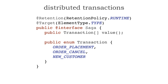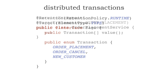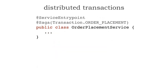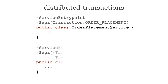In this case, out of dozens of operations, we only have three: order placement, order cancel, and new customer. I'll take that annotation and apply it on the entry point class of my microservice — identified through another identity annotation called service entry point. On the service entry point, I can mark a saga to say that this is involved in a transactional unit of work with multiple services called 'order placement.'